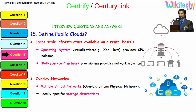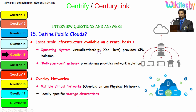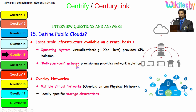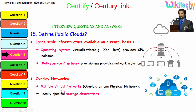Still further about the features: it is a large-scale infrastructure available on a rental basis. Virtual machines like XenVM and KVM are typical examples — they provide CPU isolation. Roll-your-own network provisioning provides network isolation. Overlay networks provide multiple virtual networks overlaid on one physical network, and there are locally specific storage abstractions.